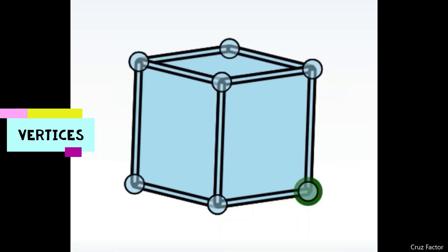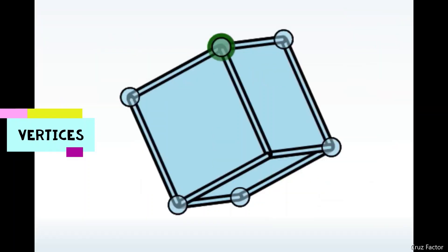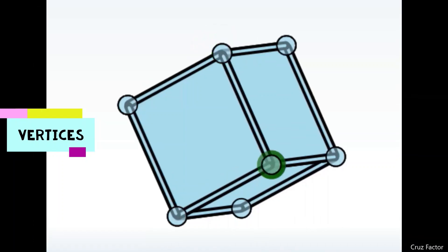And like what I've been doing with the others, I'm going to shift it so we can keep counting. Here we've got seven vertices, and then the last one here is eight vertices. So the number of vertices that a cube has is eight vertices.